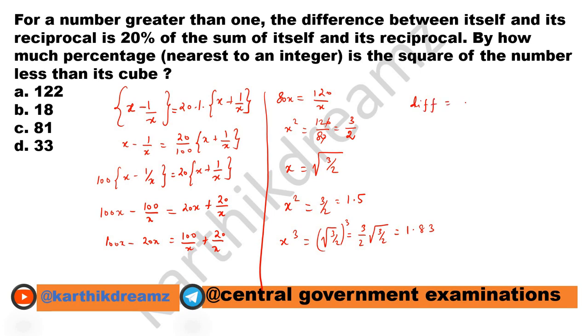So now the difference equals 1.83 minus 1.5 which is 0.33. Here they are asking with respect to x cube how much percentage x square is less. Therefore in the denominator we will have x cube value 1.83. In the numerator we will have the difference 0.33 into 100.